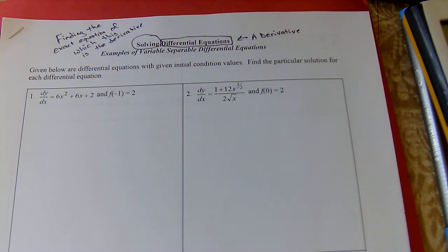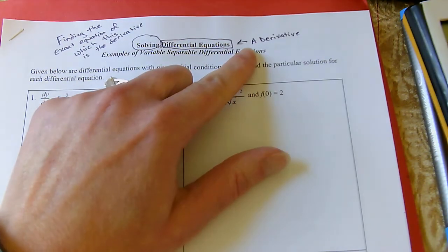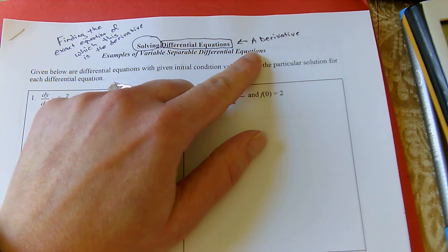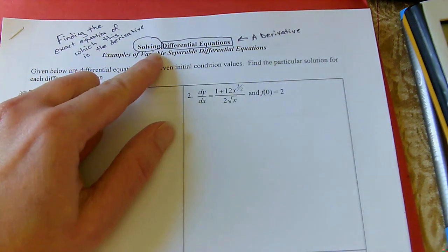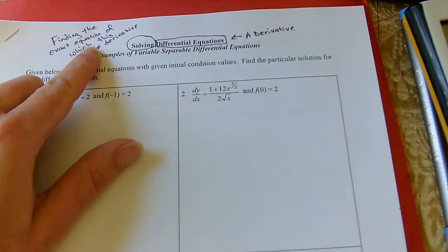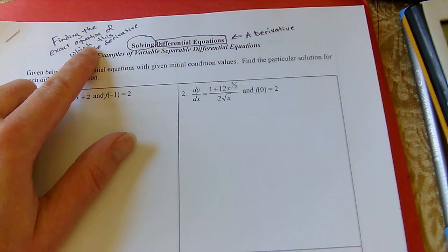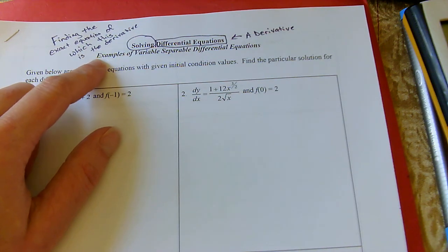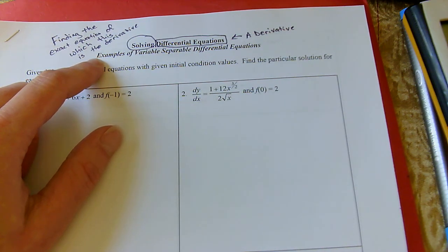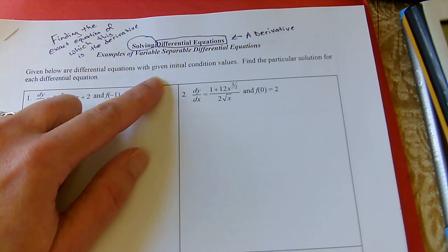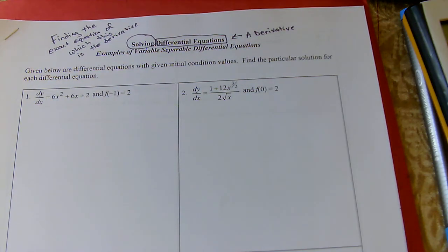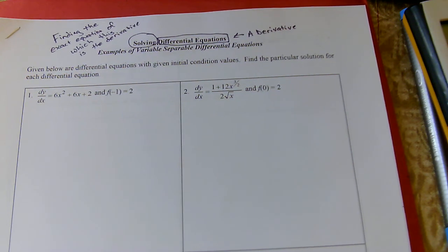We've solved differential equations before. A differential equation is just a derivative, and when we're asked to solve, that means to find the exact equation of which what we're given is the derivative. We usually have to have some kind of initial values so that we can find the particular solution for this derivative.